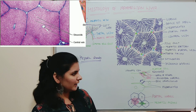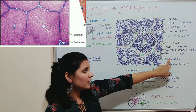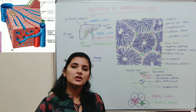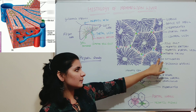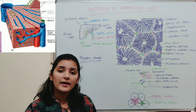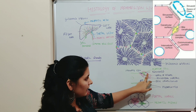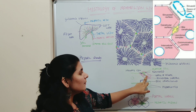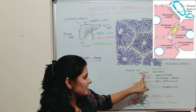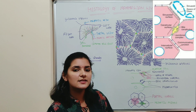Between the hepatic cords or hepatic plates, blood channels are present called sinusoids. These sinusoids are the intralobular system of blood channels — 'intra' meaning inside the lobule. These sinusoids are lined by an endothelium. As you can see in this diagram, this is a sinusoid lined by a layer of endothelial cells. Between the endothelial cells and the adjoining liver cell, a small space is present known as the space of Disse.